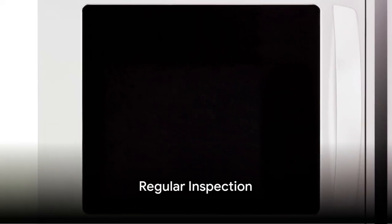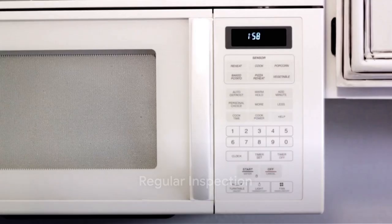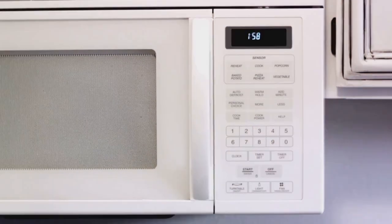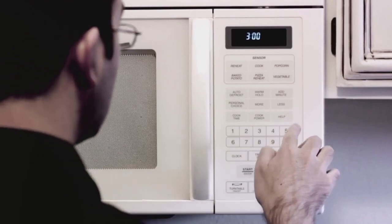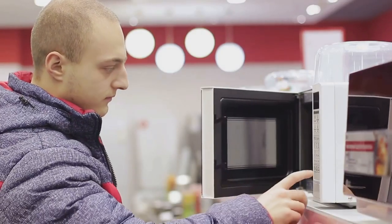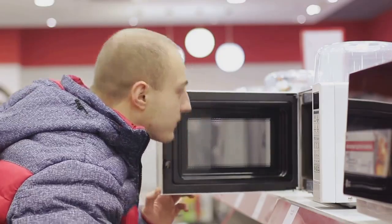Next, it's crucial to inspect your microwave for damage. Check the door seal, power cord, and plug regularly. Any damage could lead to leakage of microwave energy or even cause a fire. If you notice any cracks or signs of wear and tear, consider getting a replacement.